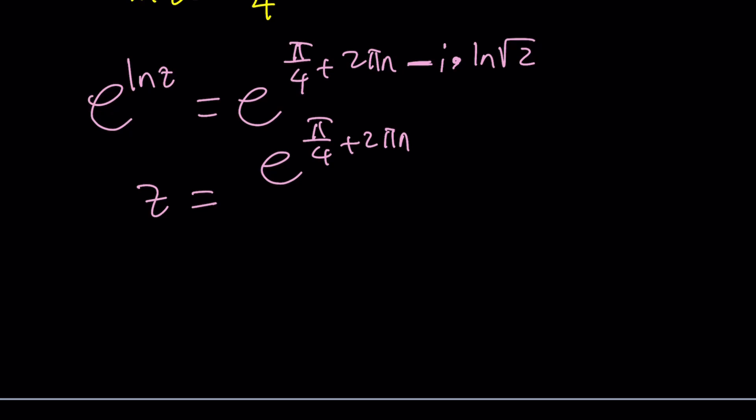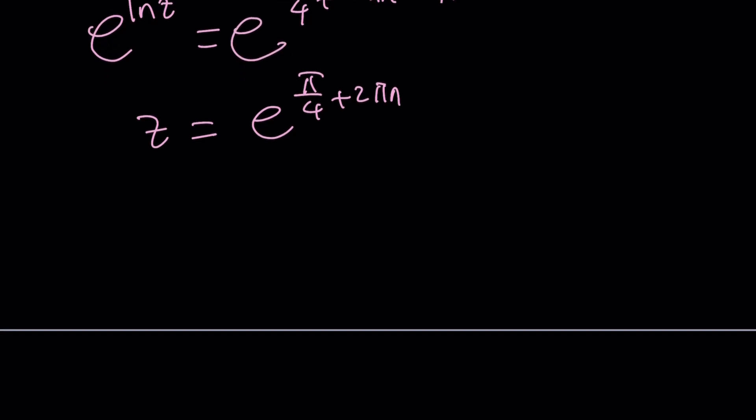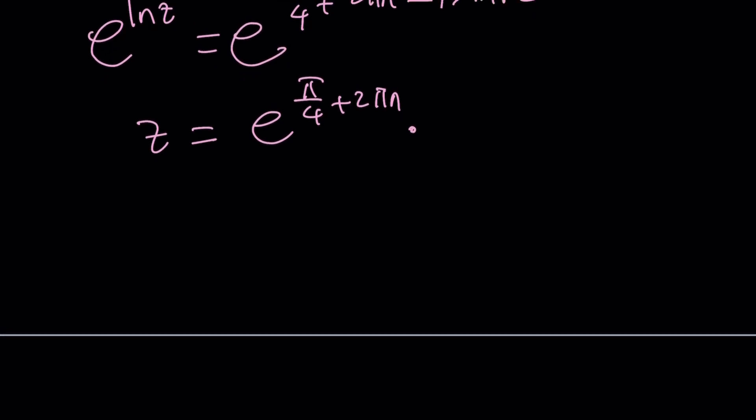We can go ahead and you know kind of write this, we can go ahead and put this here. Now we can also write this as e to the power negative i times ln root 2. This is probably better because we want to multiply it rather than divide it right.